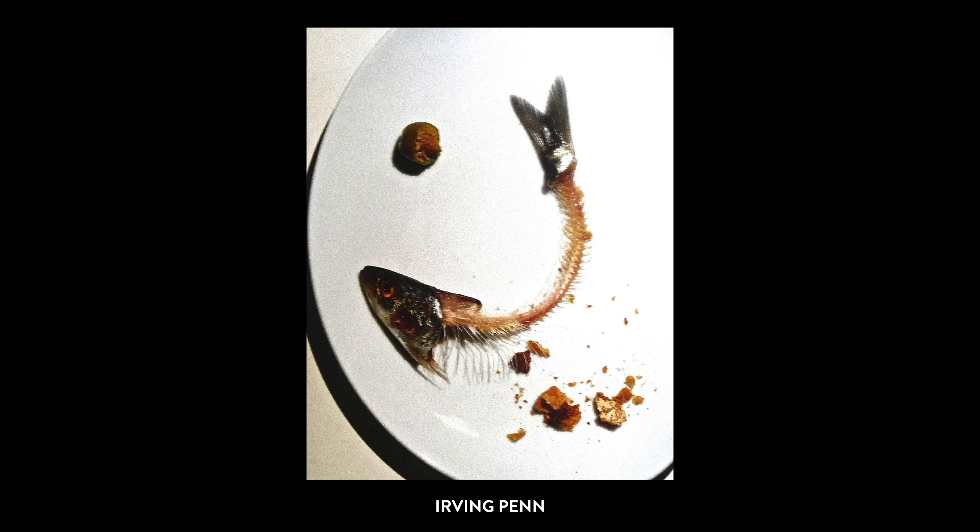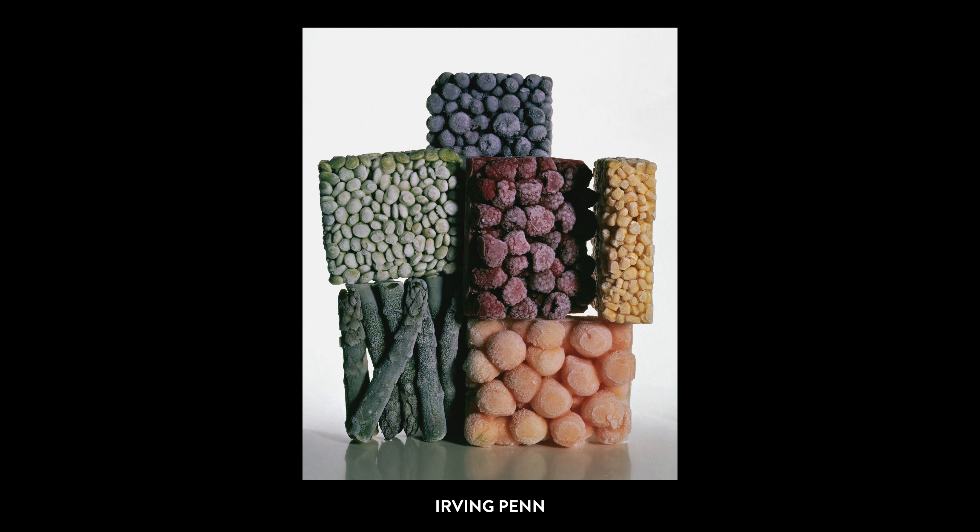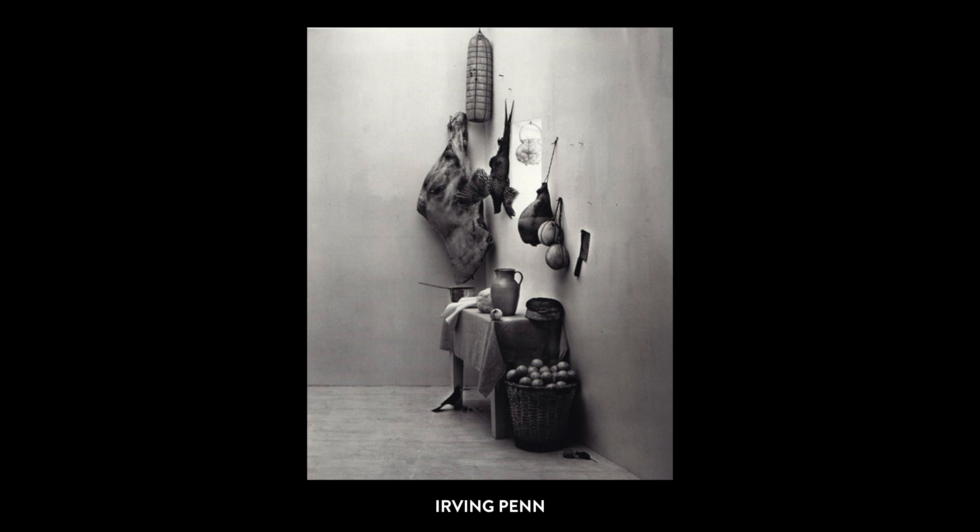Some of my favorites are the still lifes Penn did of frozen foods. First of all, the subject is strange — who would shoot frozen packaged food at that time? But the takeaway is that you're going to be most successful in photography when you find a way to do something new and different that pushes you creatively into a direction you haven't gone before. Something that's not trend-based, something that's not style-based. Irving Penn is a really interesting example of where we see that.